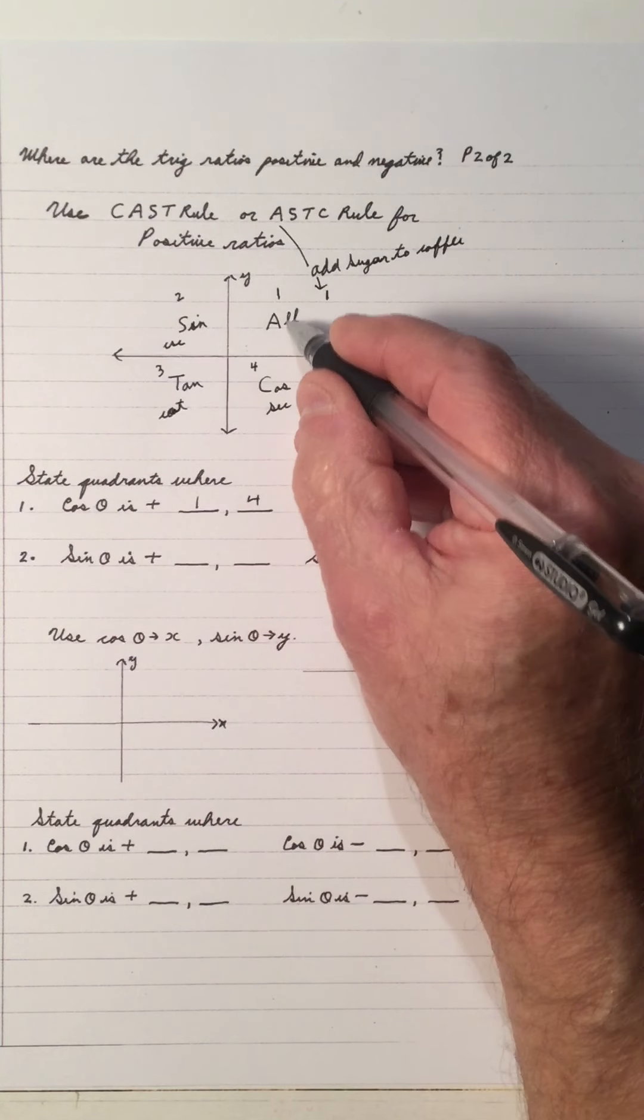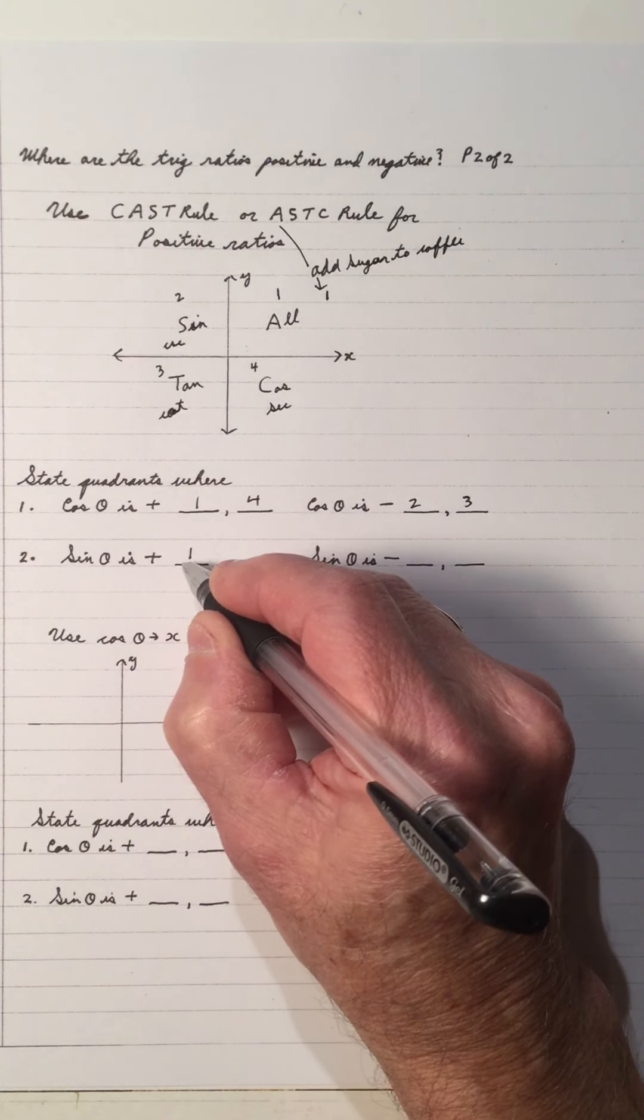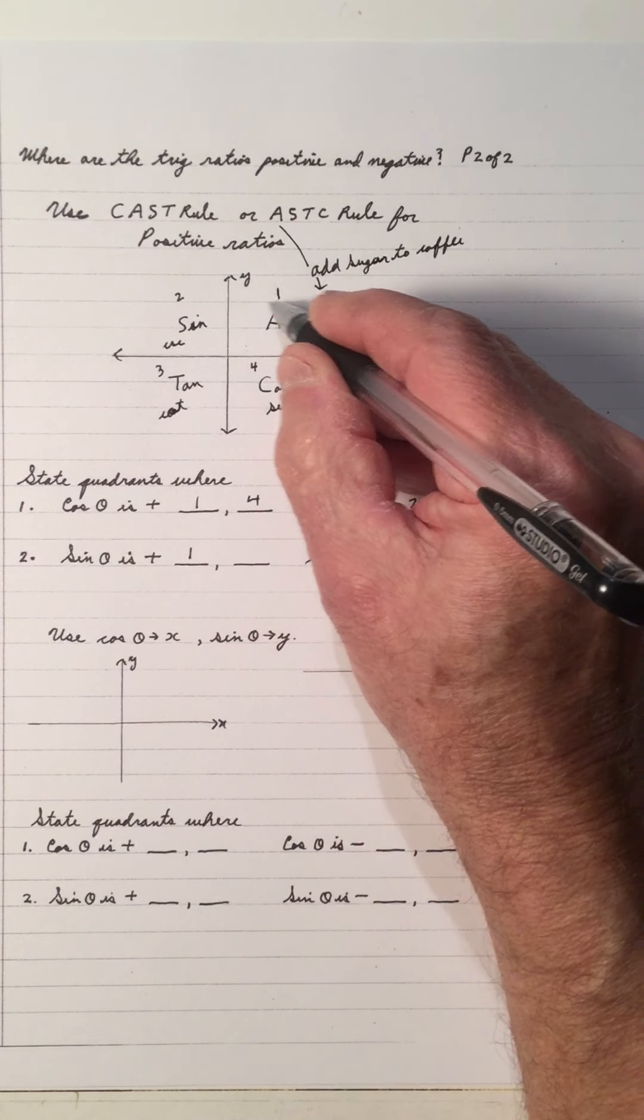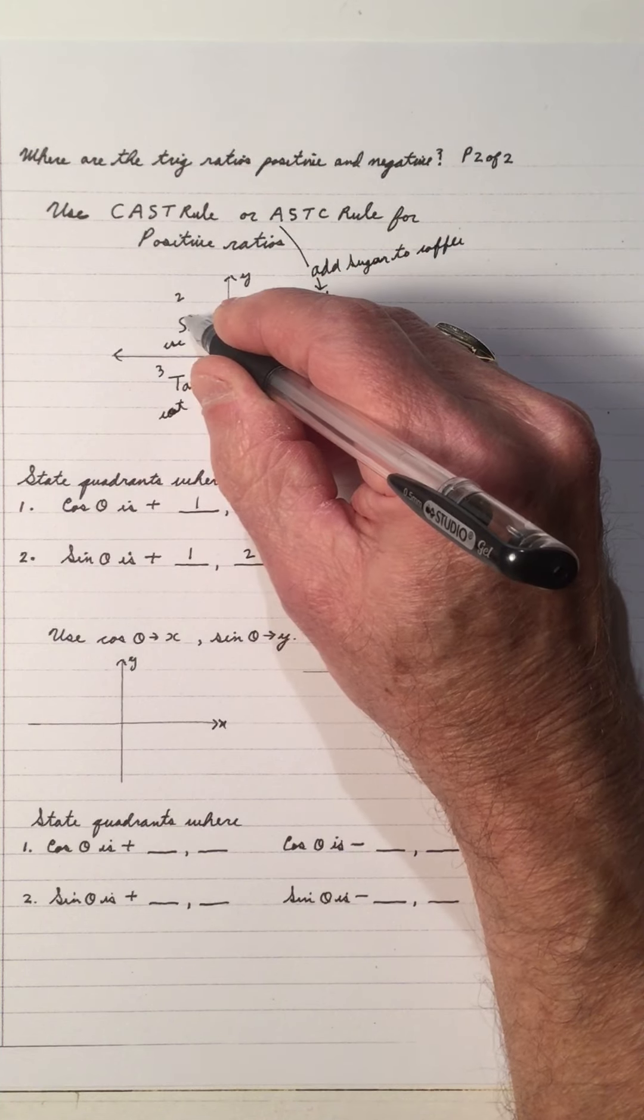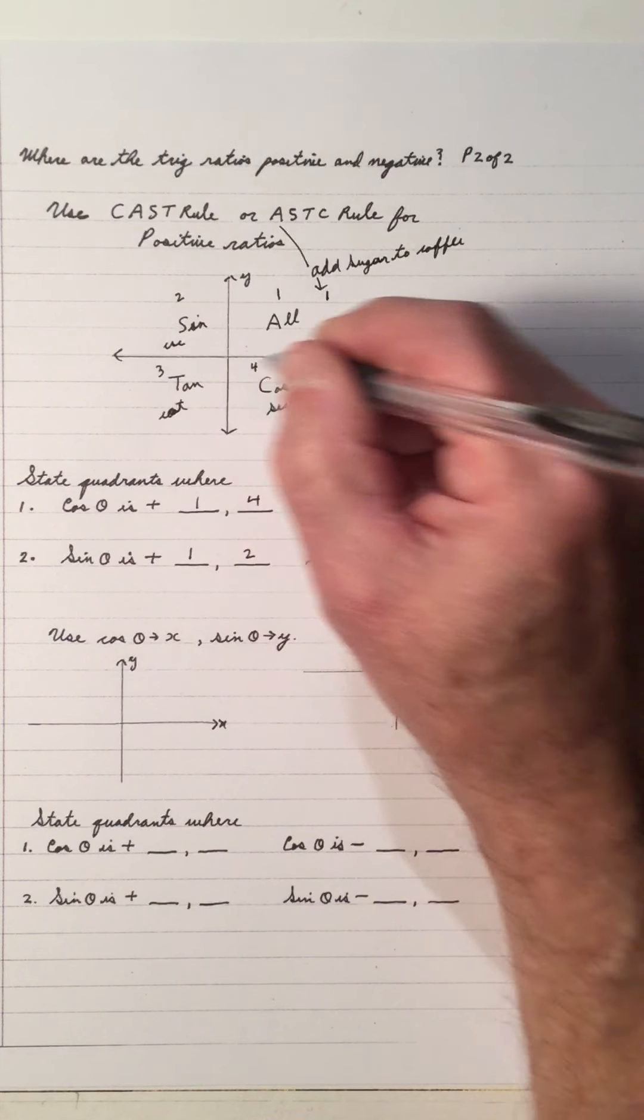Sine is positive in number 1. Everything is positive in number 1. So sine is also positive in 2, 1 and 2. So sine is positive in 1 and 2. It must be negative in 3 and 4.